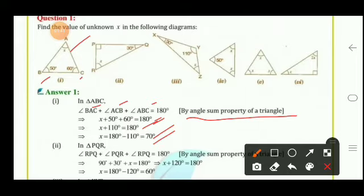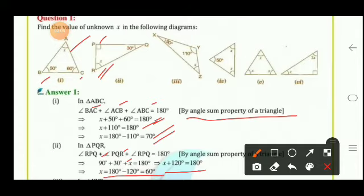Part 2 — in triangle PQR, angle P = 90°, angle Q = 30°, angle R = x. So 90 + 30 + x = 180, giving x + 120 = 180, therefore x = 60°. Part 3 — angles are 30°, 110°, and x. So 30 + 110 + x = 180, giving x + 140 = 180, therefore x = 40°.